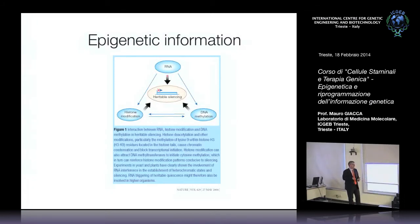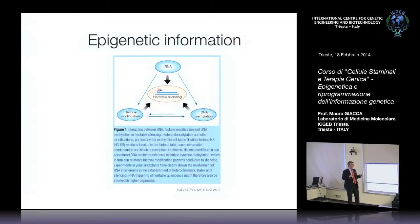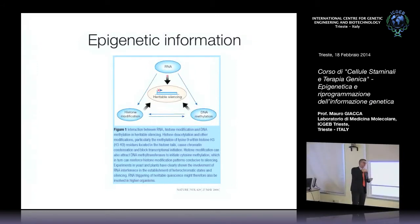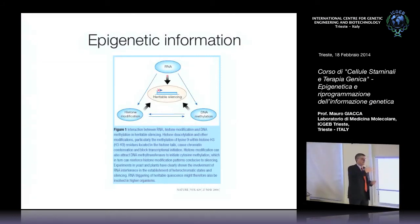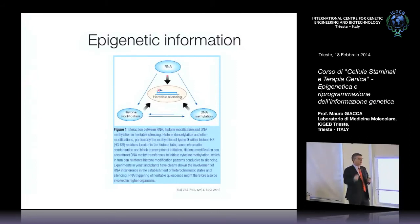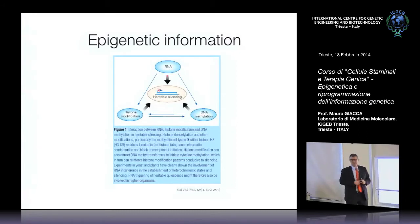Il problema si sposta a capire cosa fa sì che dei geni siano accesi — trascritti e poi tradotti — e degli altri siano spenti. Questo riguarda il grande settore dell'epigenetica, avuto un enorme boom negli ultimi 10 anni: un tipo di informazione non dipendente dalla sequenza del DNA, ma da come questa viene utilizzata, che ha la caratteristica di essere tramandata da cellula a cellula attraverso le generazioni.